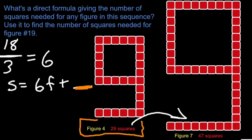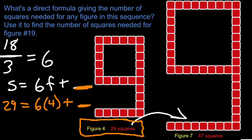That formula needs to work with figure 4. When I have figure 4, what do I need to add so that the number of squares is 29? 6 times 4 is 24 plus 5 is 29. That's going to be the end of my formula.